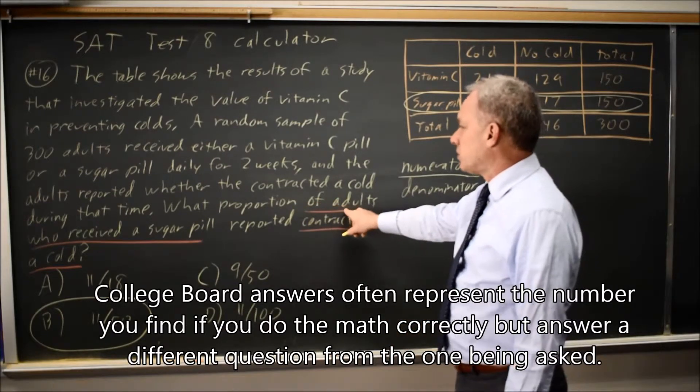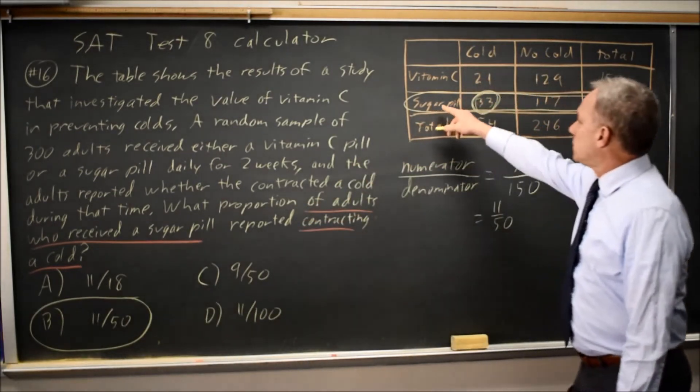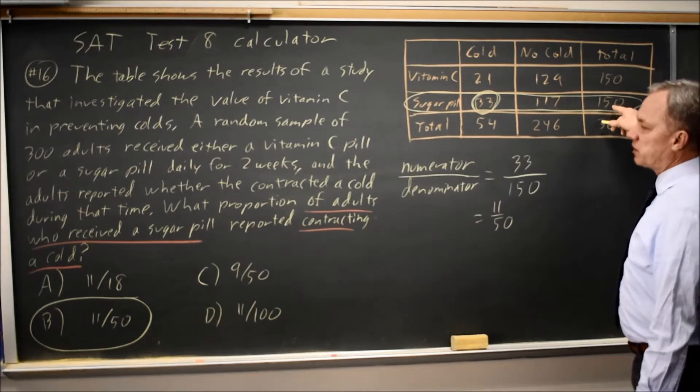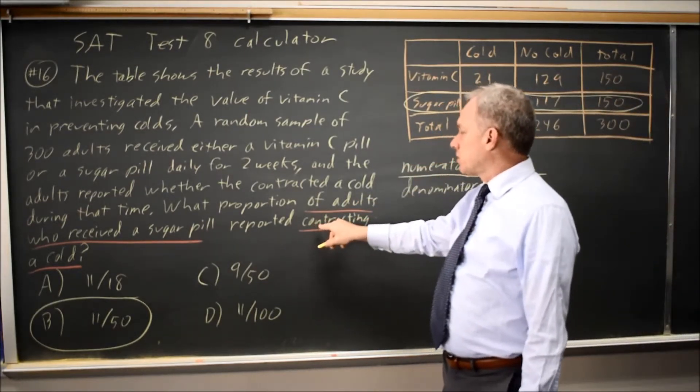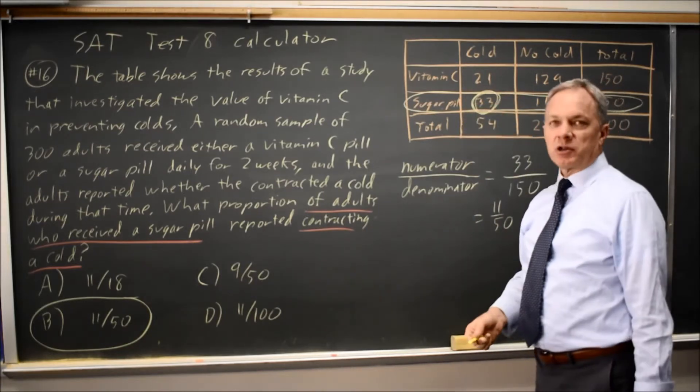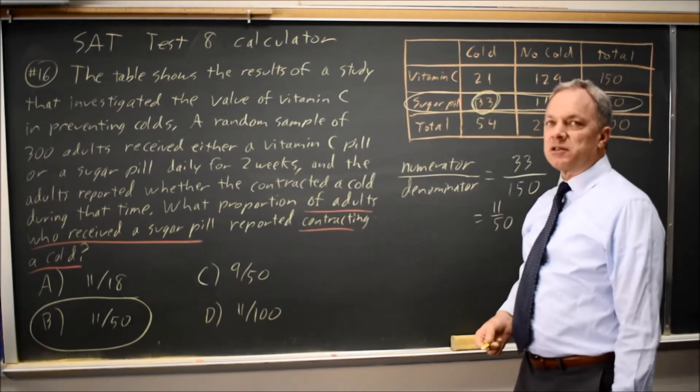What proportion of adults who received a sugar pill? My denominator was adults who received a sugar pill. Well, of those, what proportion report contracting a cold? That would be these 33 out of 150, so I have the right answer.